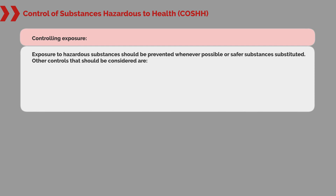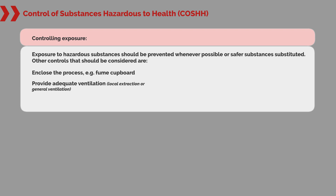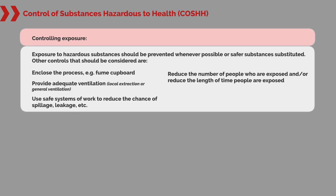Controlling exposure: exposure to hazardous substances should be prevented whenever possible, or safer substances substituted. Other controls to consider include enclosing the process, for example using a fume cupboard, providing adequate ventilation (local extraction or general ventilation), using safe systems of work to reduce the chance of spillage or leakage, and reducing the number of people exposed or the length of time they are exposed.